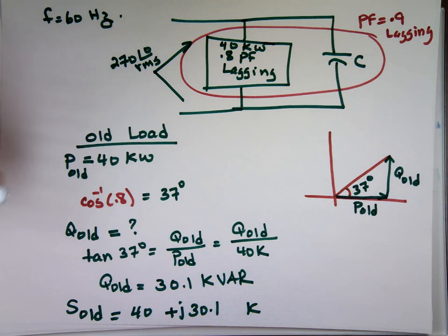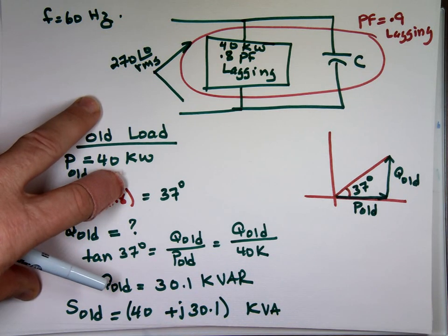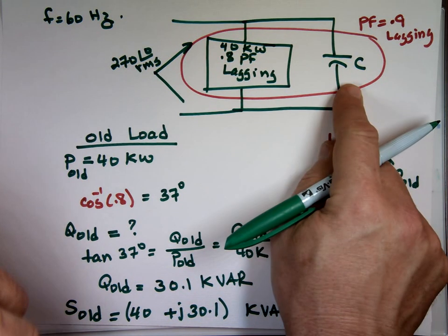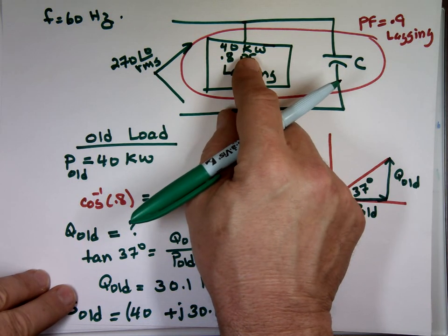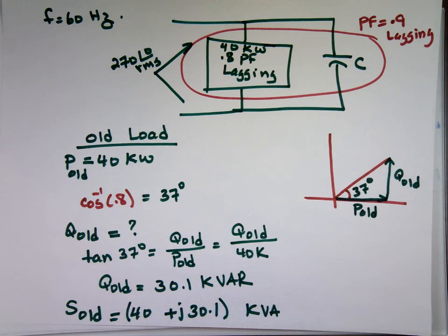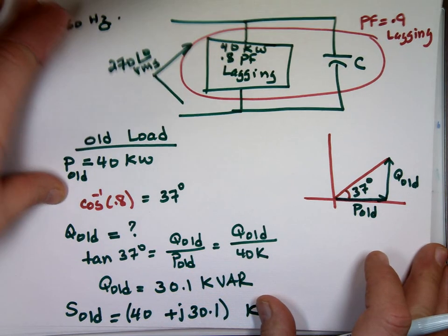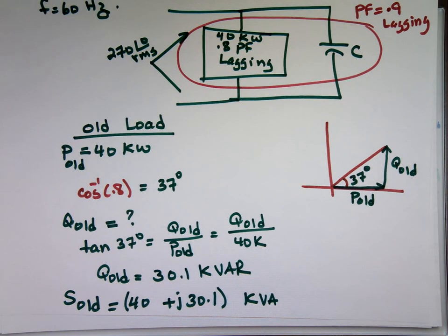If you want the units, that's VA. Now let's look at the new one. You're putting a capacitor in it there. So guess what? That real portion is not going to change. That's still going to be 40. Because that capacitor does not affect the average power.